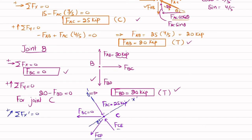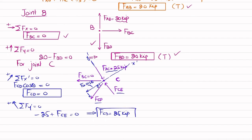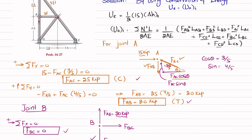The angle theta is defined. F_CD has a component F_CD times cos(theta) along X-dash. Since no other force acts along X-dash, F_CD times cos(theta) equals 0, meaning F_CD equals 0. Applying sum of forces along Y-dash equals zero: minus 25 plus F_CE equals 0, so F_CE equals 25 kips.